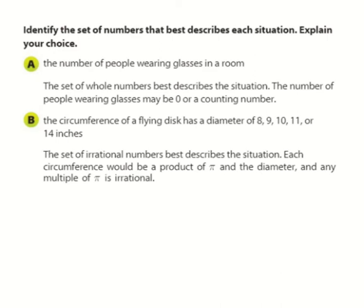B, the circumference of a flying disc has a diameter of 8, 9, 10, 11, or 14. The set of irrational numbers best describes the situation. Each circumference would be the product of pi. And again, we're not into geometry right now, but just knowing that anything that we talk about as far as the circle goes with circumference or area is going to be involved with pi, which I told you earlier, anytime pi is involved, it's automatically in the irrational category.